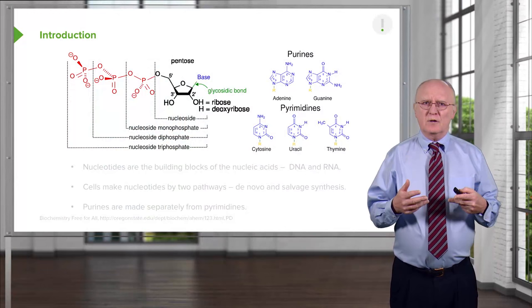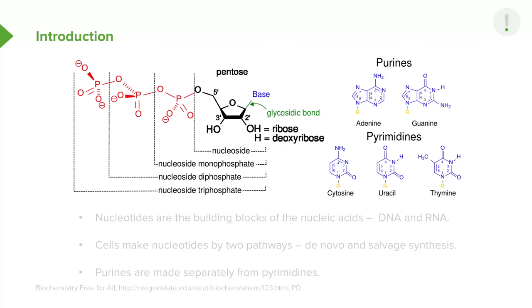All nucleotides contain three distinct components. The first is the pentose, a five-carbon sugar, in the center of the structure. On the right side attached to the pentose, shown in blue, is a base. That base corresponds to either purines or pyrimidines — the purines being adenine and guanine, the pyrimidines being cytosine, uracil, or thymine. The third component of a nucleotide is at least one phosphate, shown in red on the left.